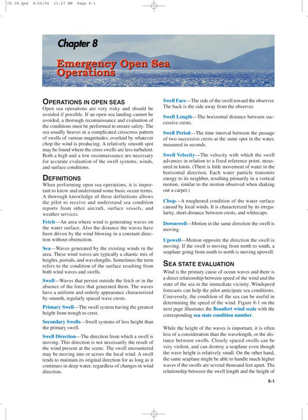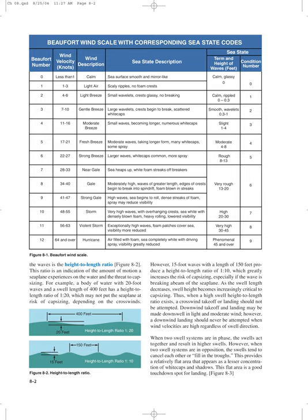On the other hand, the same seaplane might be able to handle much higher waves if the swells are several thousand feet apart. The relationship between swell length and wave height is the height-to-length ratio. This ratio is an indication of the amount of motion a seaplane experiences on the water and the threat of capsizing. For example, a body of water with 20-foot waves and a swell length of 400 feet has a height-to-length ratio of 1:20, which may not put the seaplane at risk of capsizing depending on crosswinds. However, 15-foot waves with a length of 150 feet produce a ratio of 1:10, which greatly increases the risk of capsizing, especially if the wave is breaking abeam of the seaplane. As swell length decreases, swell height becomes increasingly critical. Thus, when a high swell height-to-length ratio exists, a crosswind takeoff or landing should not be attempted.